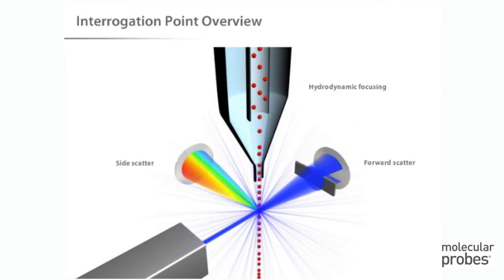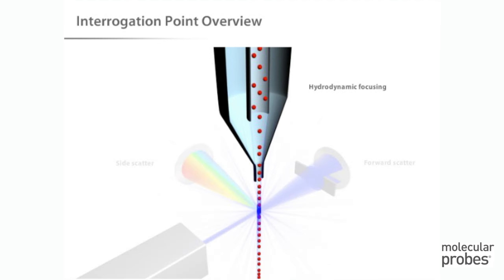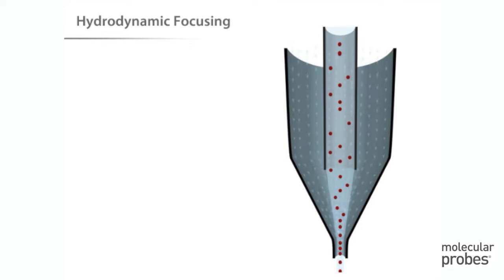The interrogation point is the heart of the system. This is where the laser and the sample intersect, and the optics collect the resulting scatter and fluorescence. First, let's talk about how the sample is delivered to the laser. Here we see how the sample is transported through the interrogation point.